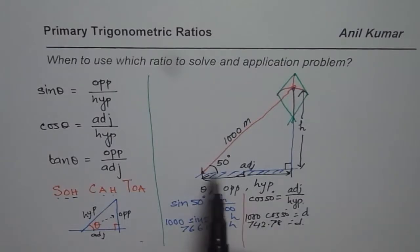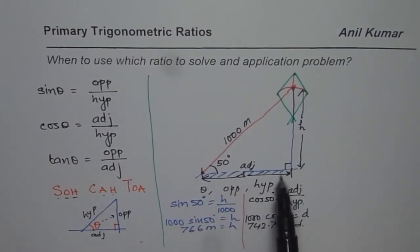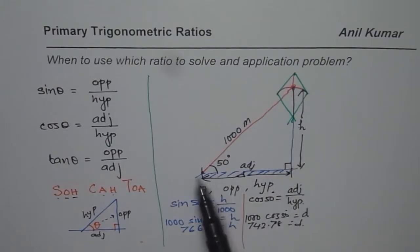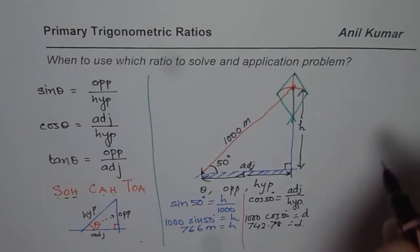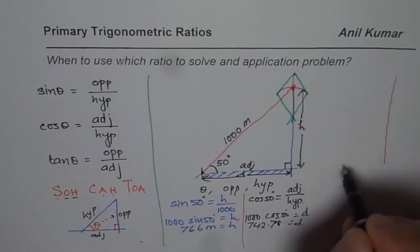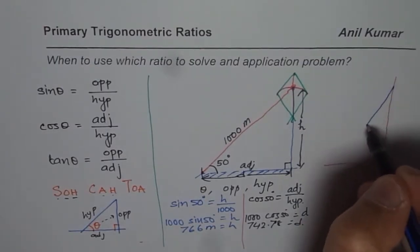From this example you can understand how to use which ratio to solve a right triangle. Now for tan, you should work with an example where the opposite side and adjacent sides are given. Let's take an example where you have a ladder leaning on a wall, forming a right angle.